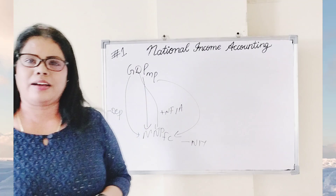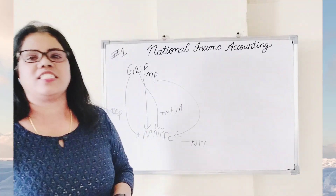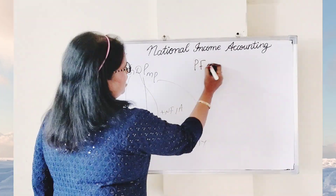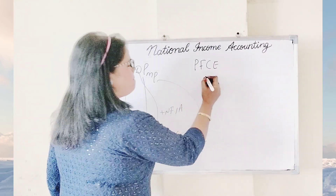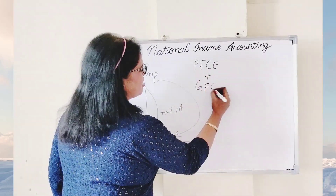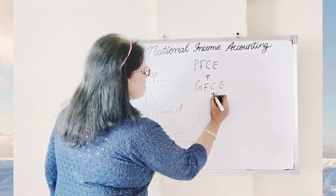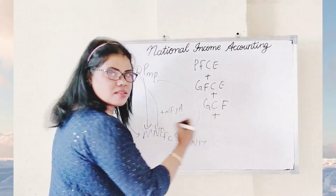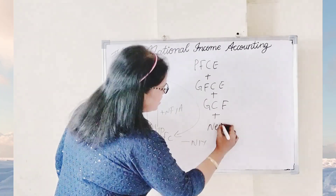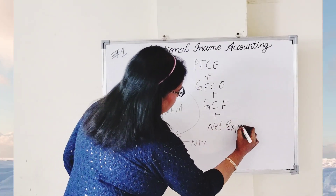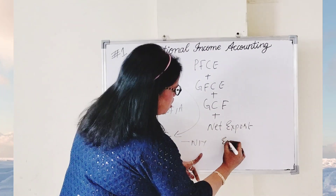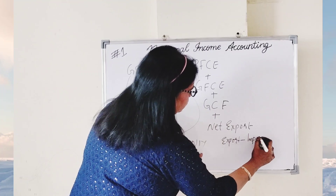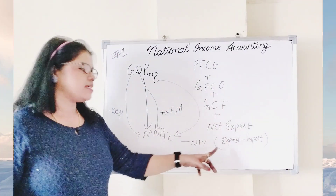We are getting national income. So with the expenditure method, how to calculate national income: first of all, private final consumption expenditure plus government final consumption expenditure plus gross capital formation plus net export. Net export means export minus import.